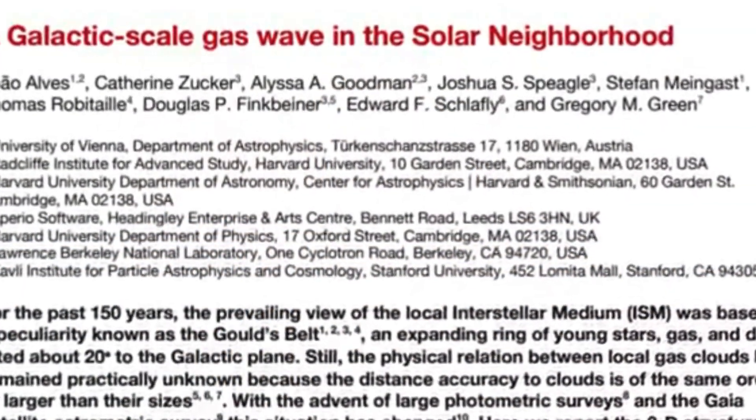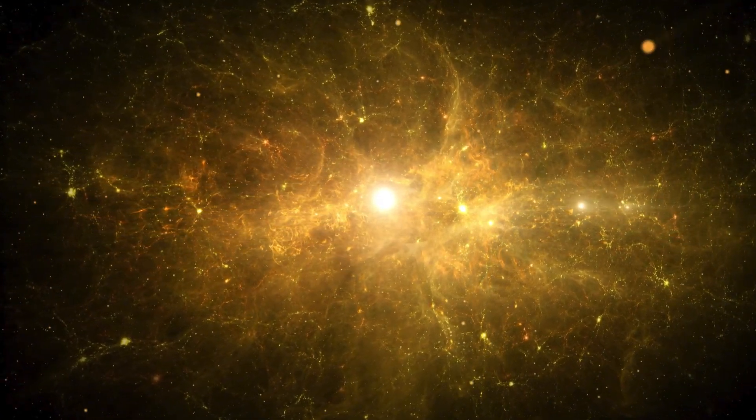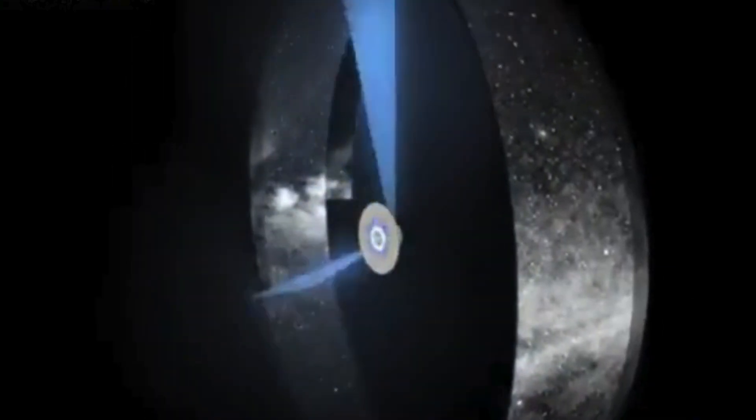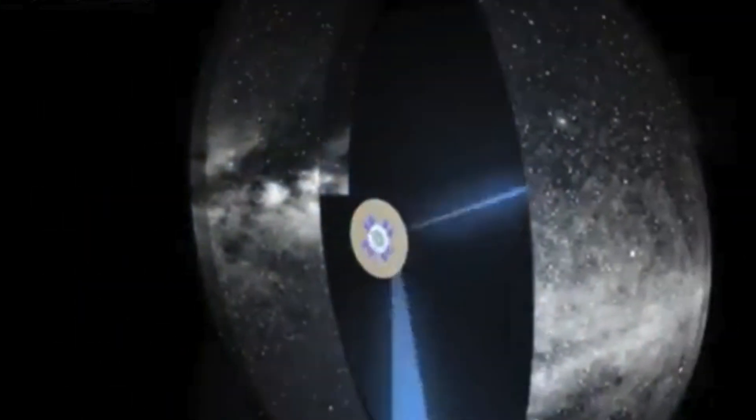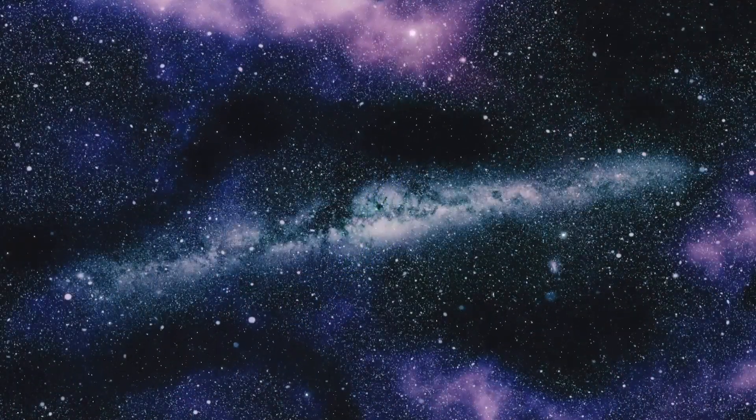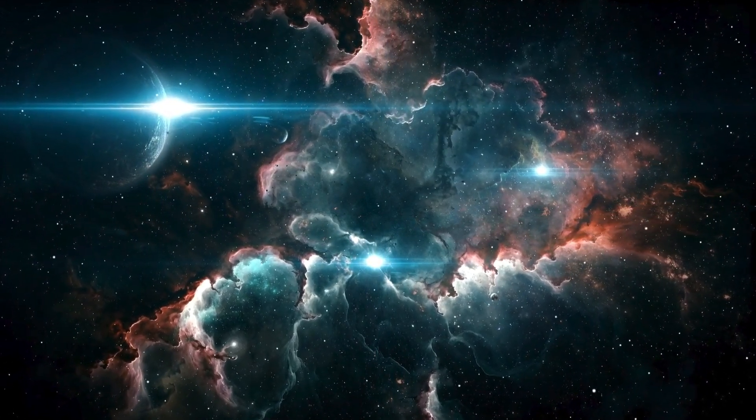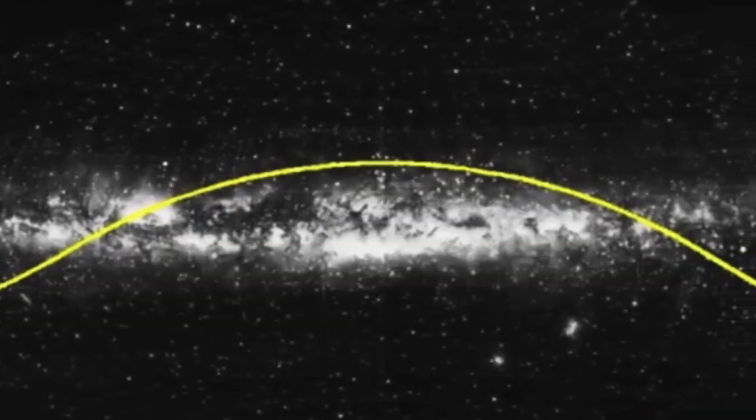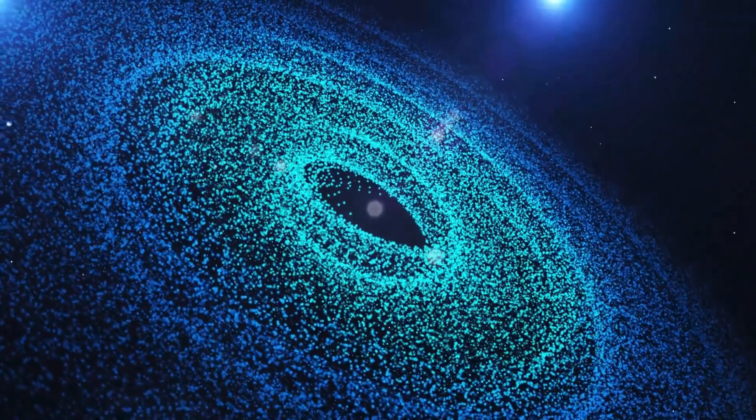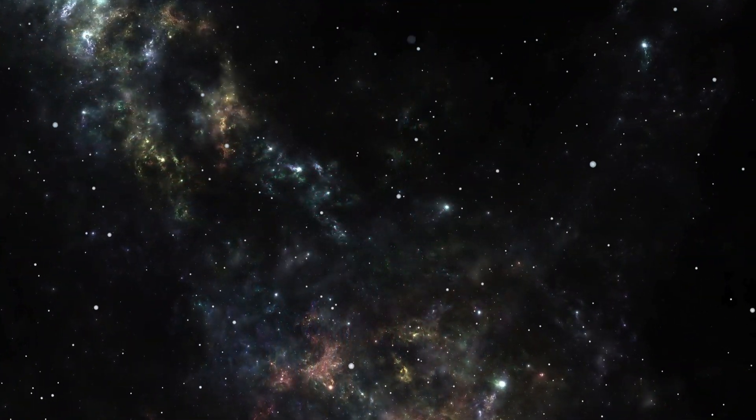When we think of forces shaping Earth's history, we often look to volcanic eruptions, asteroid impacts, or shifts in climate. But what if one of the most significant influences came not from Earth itself, but from deep within our galaxy? Scientists have recently uncovered evidence that, around 14 million years ago, our solar system passed through a colossal interstellar structure known as the Radcliffe Wave, an immense undulating ribbon of gas and dust stretching 9,000 light-years across the Milky Way.